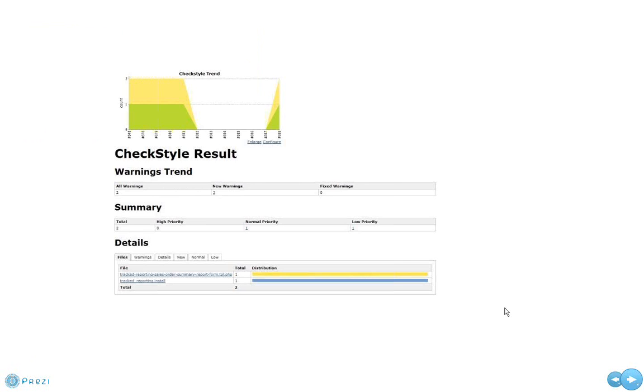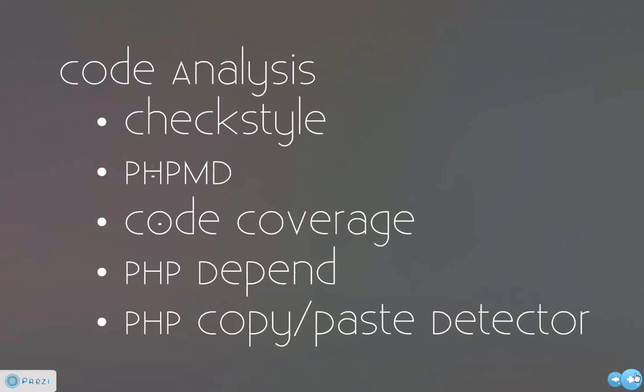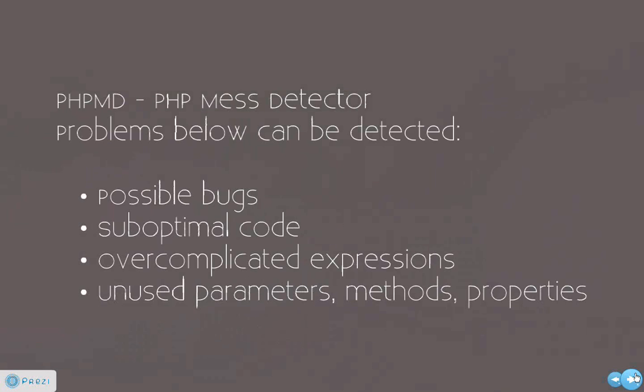Our next tool is PHP MD. What is PHP MD? PHP MD is basically a PHP Mess Detector. What it does is detect problems in the code — possibly a bug, suboptimal code, over-complicated expressions, unused parentheses, methods and properties. Basically, whatever mess you create in the code is checked. It checks over-complicated expressions, like a for loop which is over-complicated.